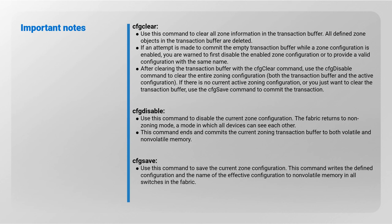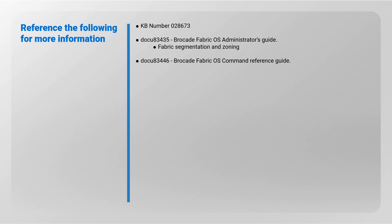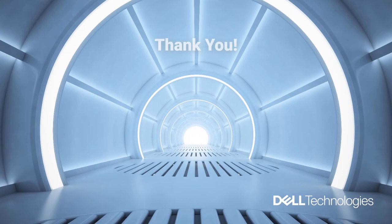CFG save: use this command to save the current zone configuration. This command writes the defined configuration and the name of the effective configuration to non-volatile memory in all switches in the fabric. Refer to KB number 0286673, DOCU-83435 Brocade Fabric OS Administrator's Guide (Fabric Segmentation and Zoning), and DOCU-83446 Brocade Fabric OS Command Reference Guide for more information.